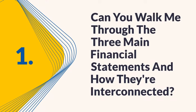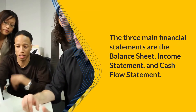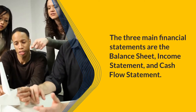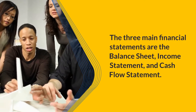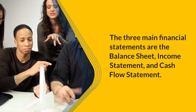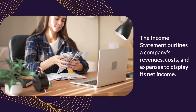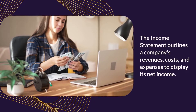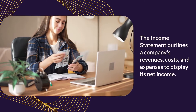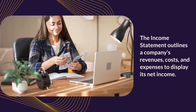Question 1: Can you walk me through the three main financial statements and how they're interconnected? The three main financial statements are the balance sheet, income statement, and cash flow statement. The income statement outlines a company's revenues, costs, and expenses to display its net income.